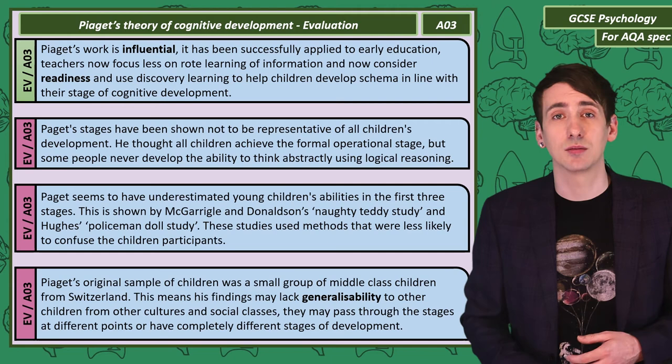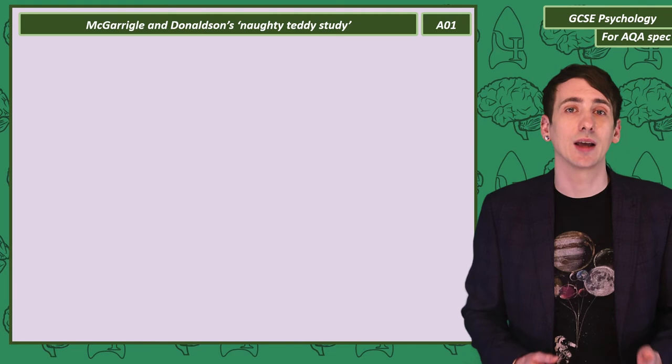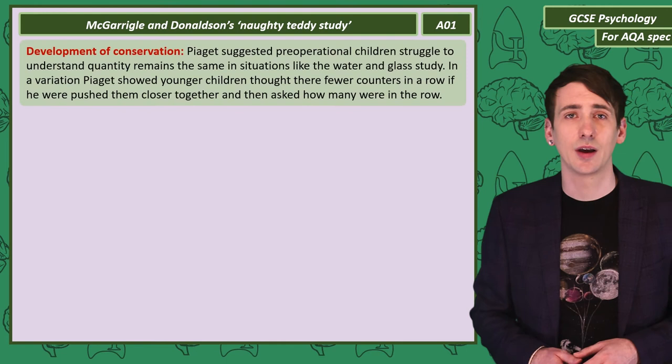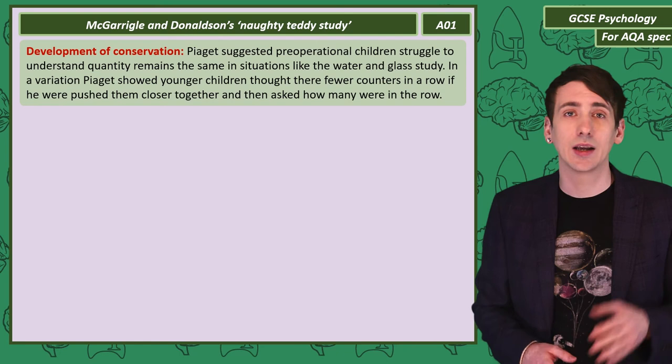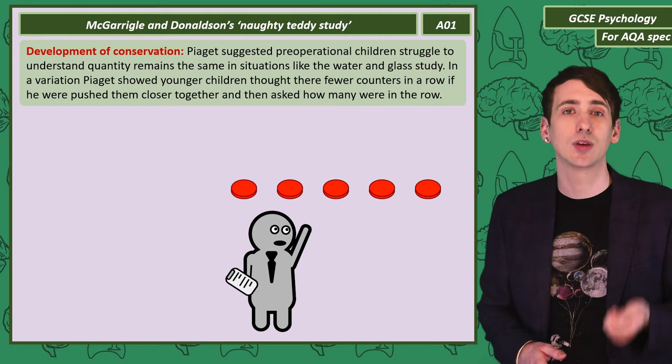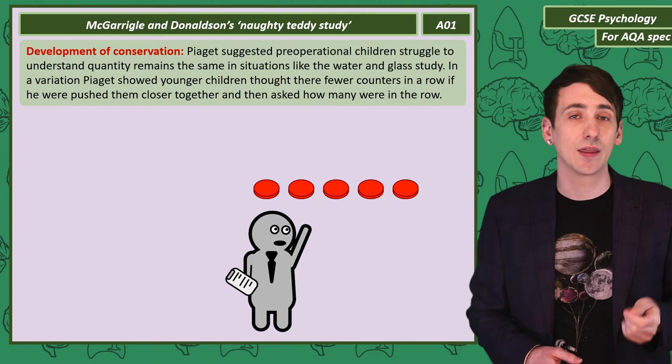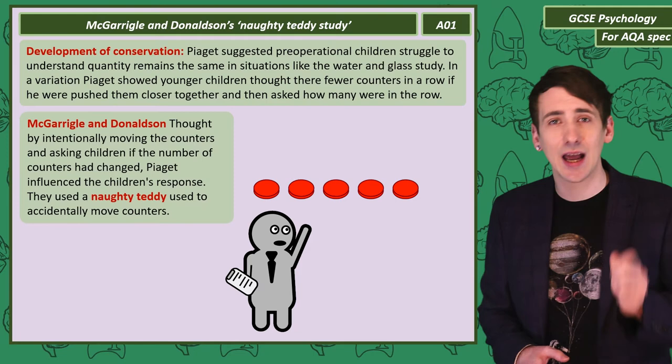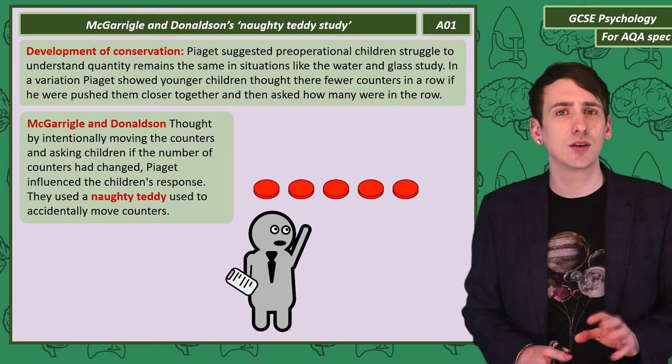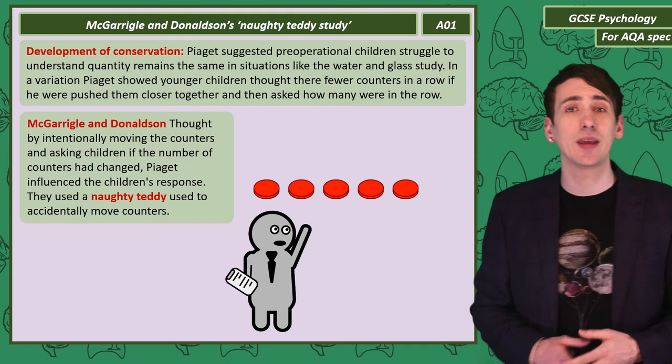The first study to look at is the Naughty Teddy Study by McGarrigle and Donaldson. Piaget used counters to demonstrate conservation — he moved a set of counters closer together, and the children often said there were fewer counters. McGarrigle and Donaldson thought that children seeing the researcher intentionally moving the counters and then being asked if the number had changed set them up to say that it had. In other words, the children's behaviour was influenced by the actions of the researcher, making it not valid.